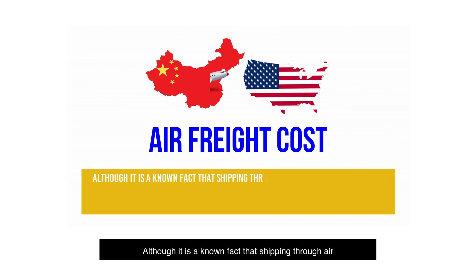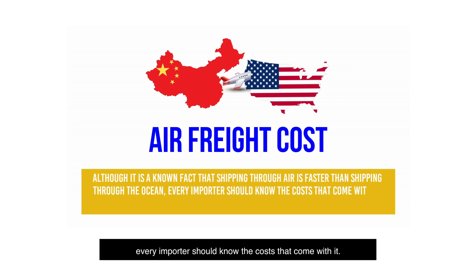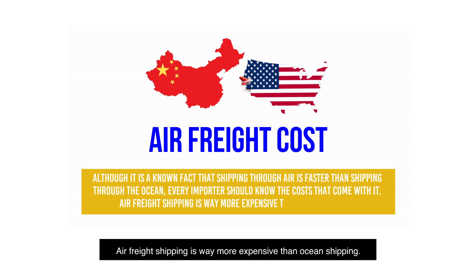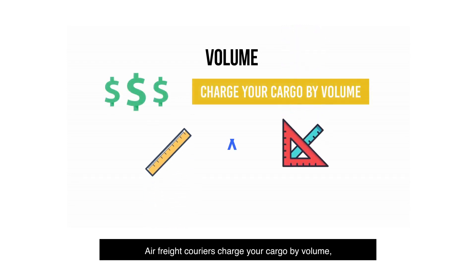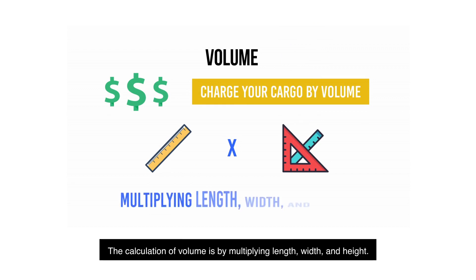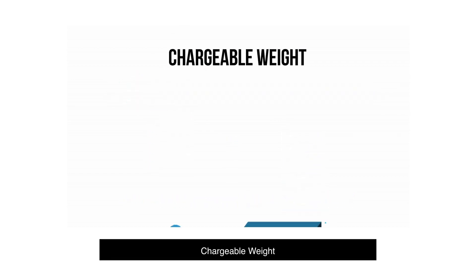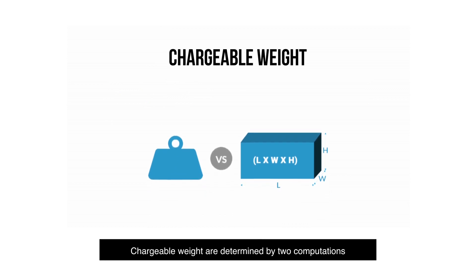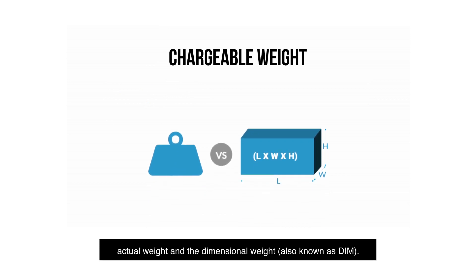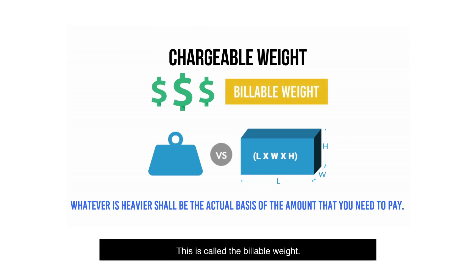Air freight: although shipping through air is faster than ocean, every importer should know the costs that come with it — air freight shipping is way more expensive than ocean shipping. Air freight couriers charge your cargo by volume, or the space that it occupies. The calculation of volume is by multiplying length, width, and height in inches. Chargeable weight is determined by two computations: actual weight and dimensional weight, also known as DIM. Whichever is heavier will be the actual basis of the amount you need to pay — this is called the billable weight.